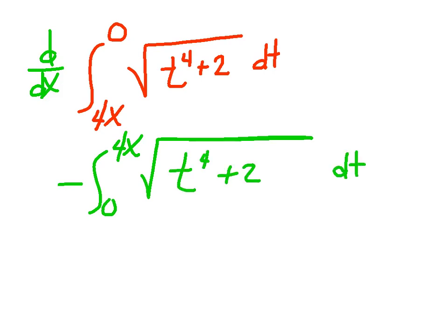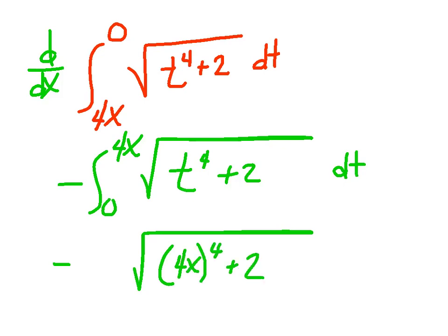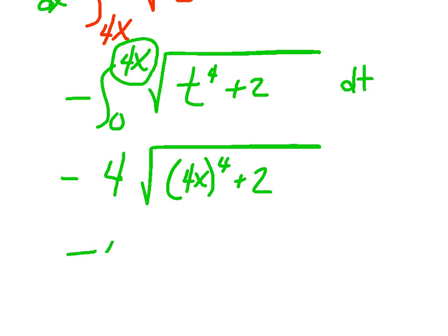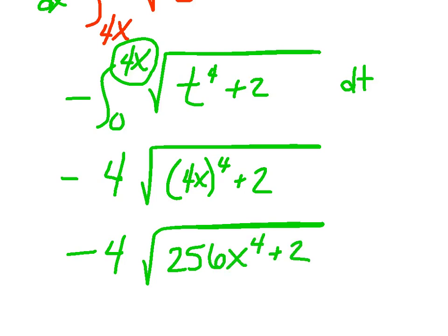I flip my bounds quickly, because I want my accumulation function — I want this variable to be the upper bound. I plug that in and get negative 4x to the 4th plus 2. Don't forget: you substituted it in, and now take the derivative of the upper bound. The derivative of 4x is 4, so multiply to get negative 4 times that quantity — that's negative 256x to the 4th plus 2, or just leave it with parentheses around it.